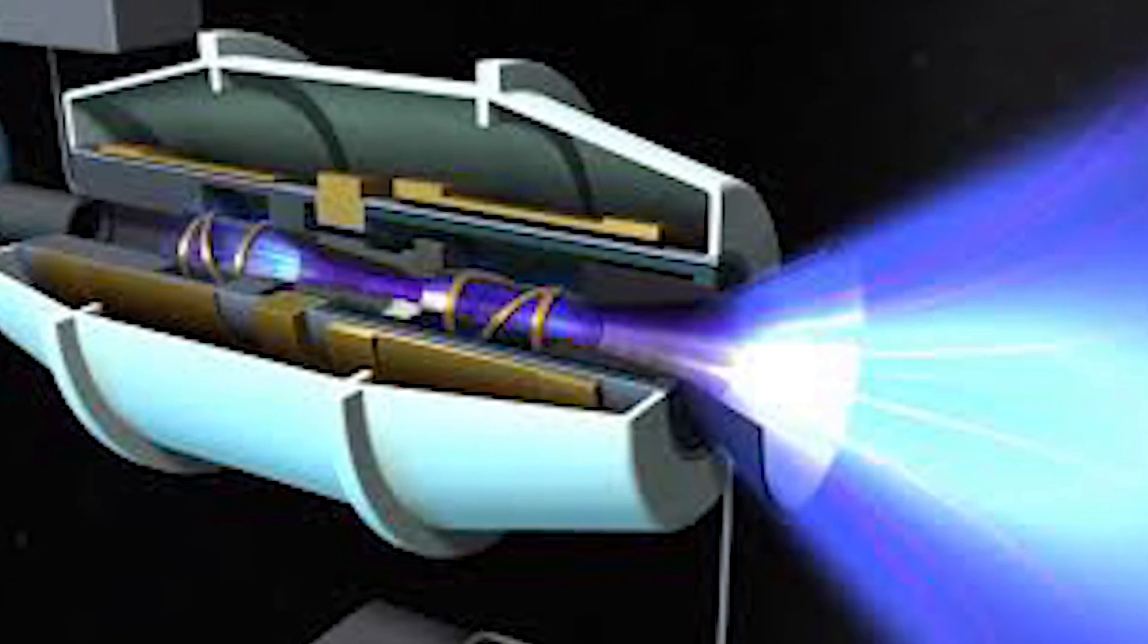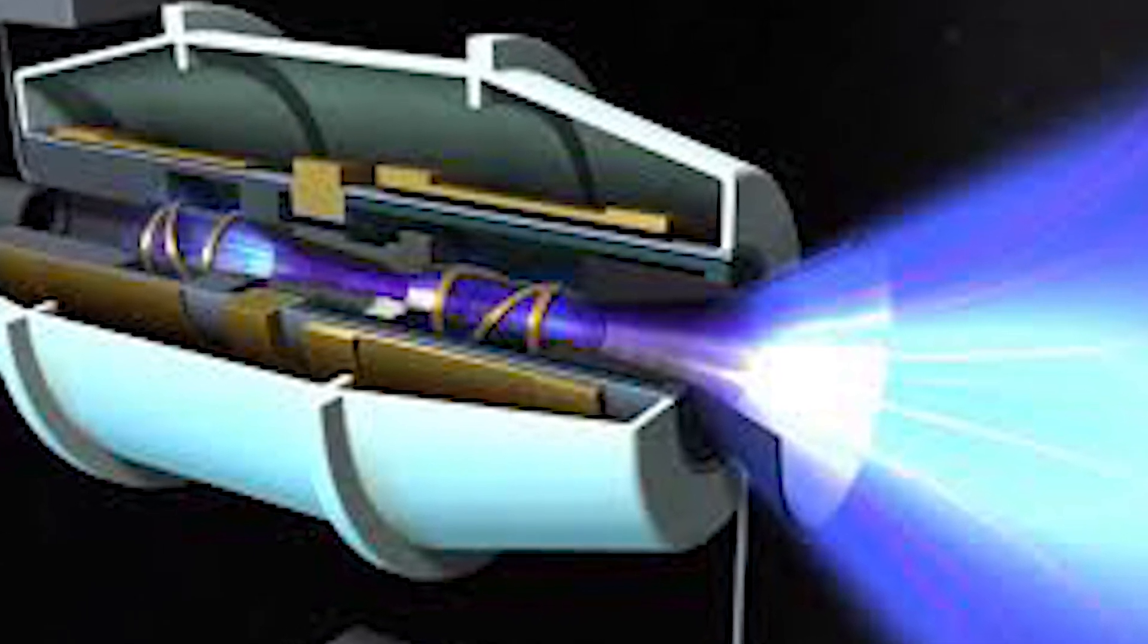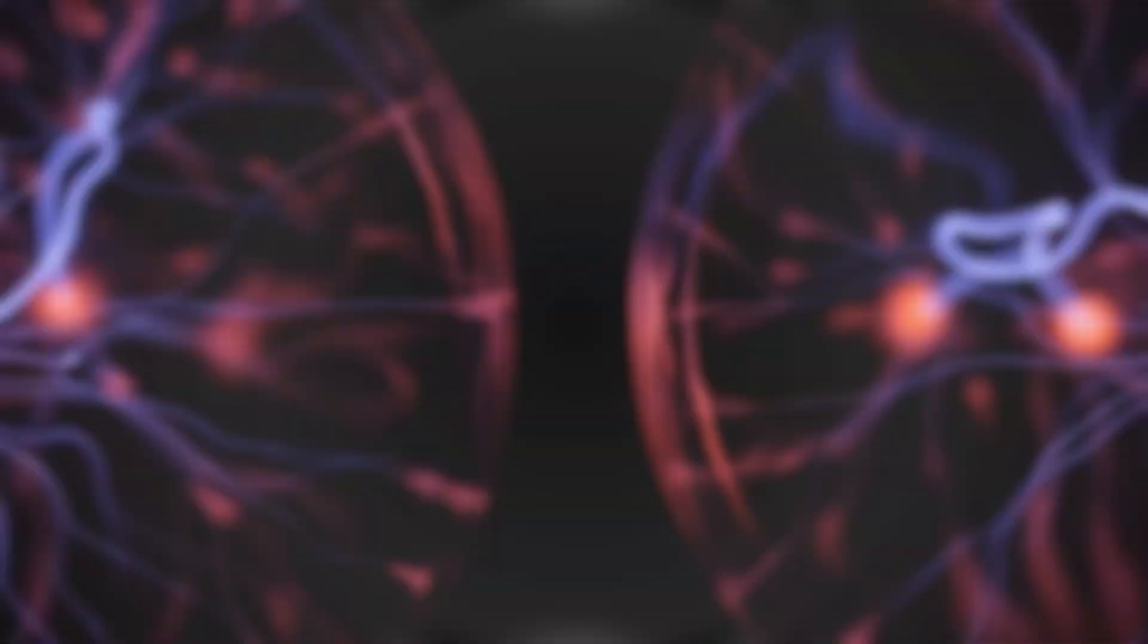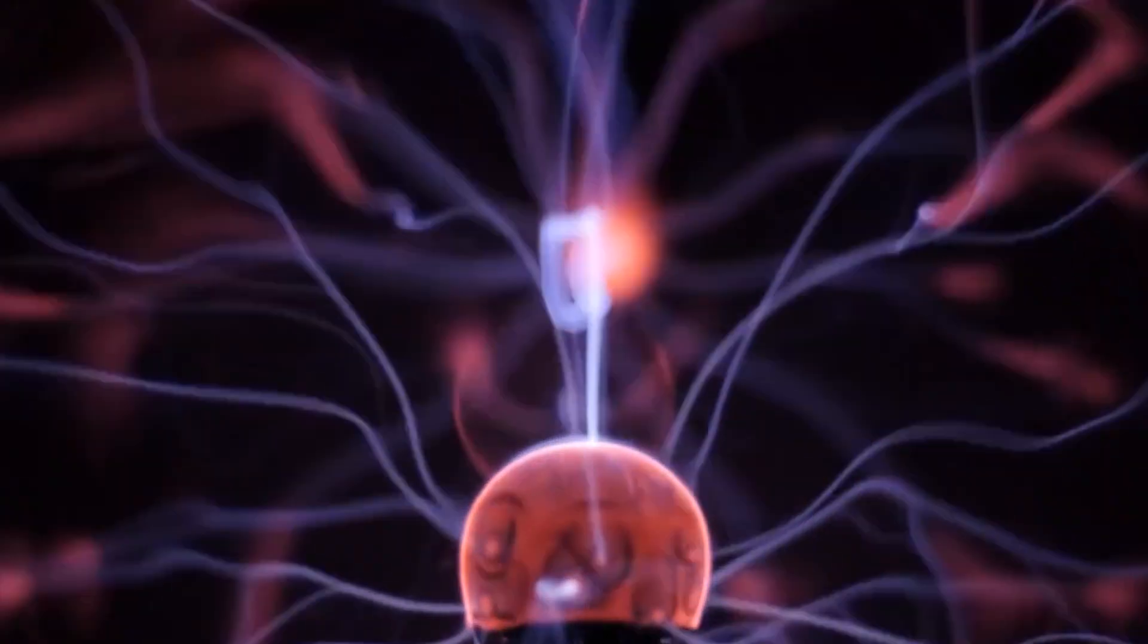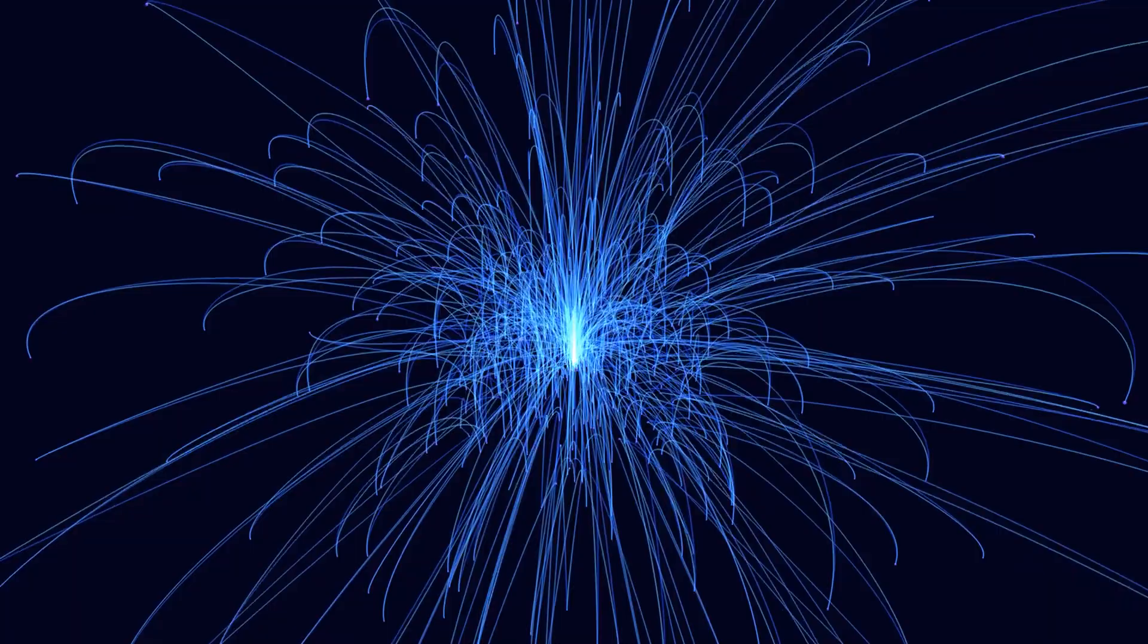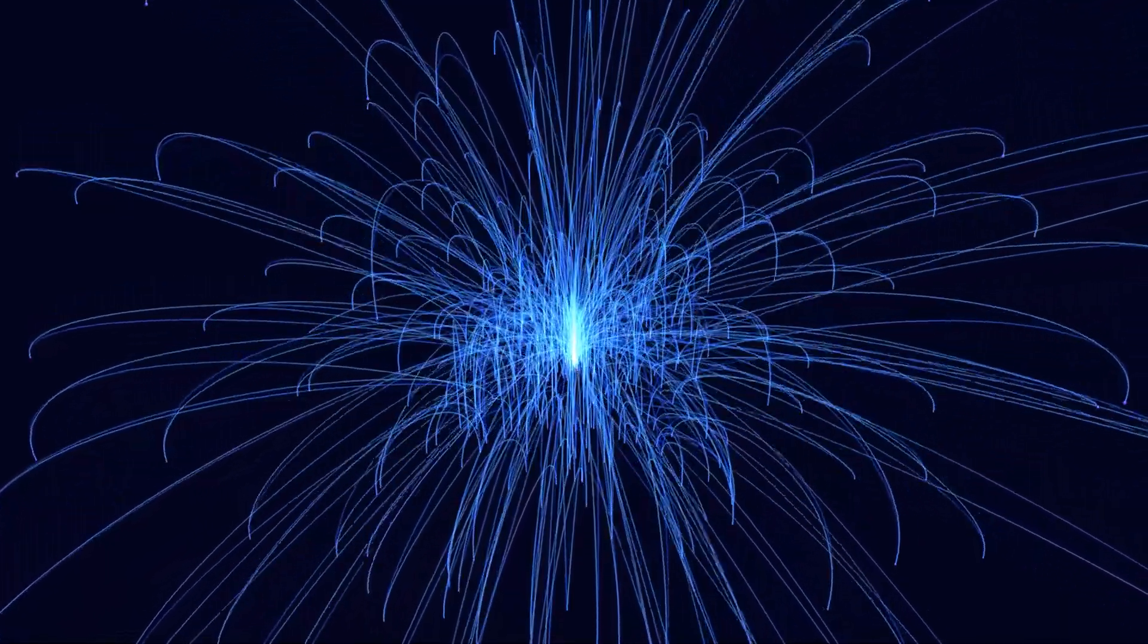Vassimer, a significant advancement in electric rocket engines, utilizes powerful radio waves emitted by special antennas called couplers. These waves play a crucial role in heating the gas to create plasma, which, with its high temperature and electric charge, propels the engine.